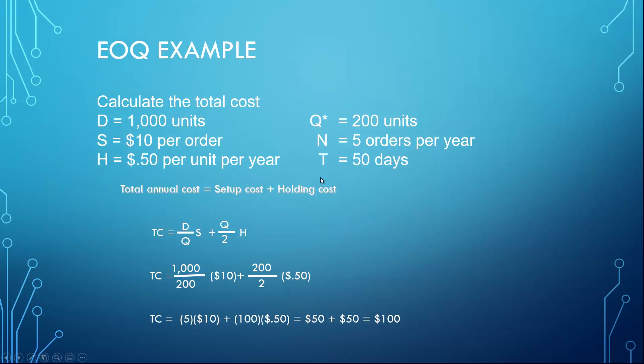To calculate the total cost, we add the ordering cost and the holding cost: Total Cost = (D/Q) × S + (Q/2) × H. Substituting the values: (1000/200) × 10 + (200/2) × 0.50 = 5 × 10 + 100 × 0.50 = 50 + 50 = $100.